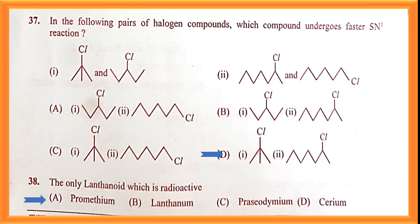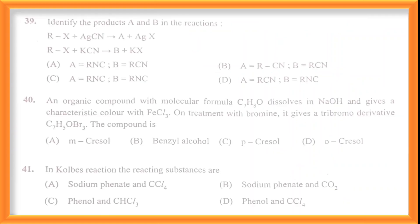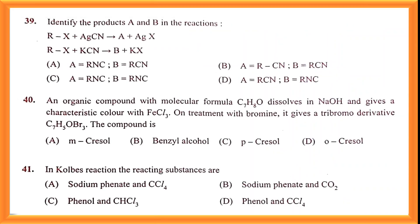Question number thirty-eight: promethium is the correct answer. Question number thirty-nine: identify products A and B. When you use AgCN, you get RNC — alkyl isocyanide — because AgCN forms a covalent compound and N is the donor. When you use KCN, you get RCN as the answer.